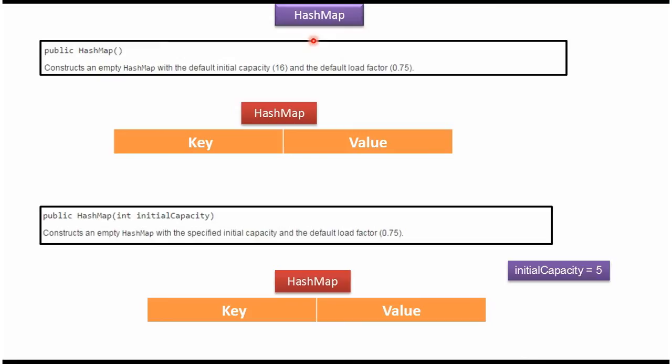In this video tutorial I will cover HashMap Constructors. This is the first HashMap constructor which is default. Using this constructor we can construct an empty HashMap with the initial capacity of 16 and load factor of 0.75.